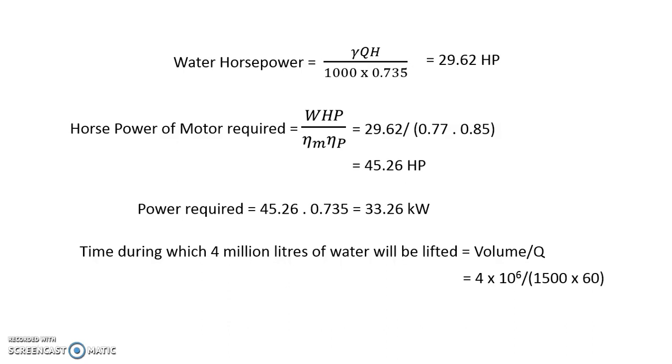We also know that discharge is volume by time, or time is volume by discharge. So volume is four million liters, 4 × 10⁶, and discharge is 1500 liters per minute into 60, so it is around 44.4 hours. So the time required is 44.4 hours. Now the time of lifting is 44.4 hours from four million liters.